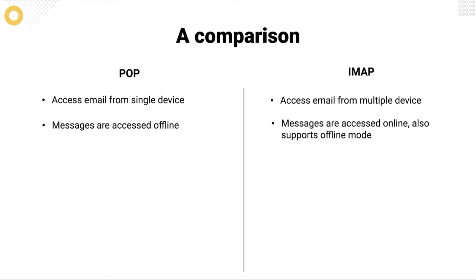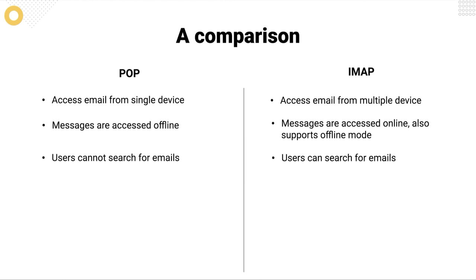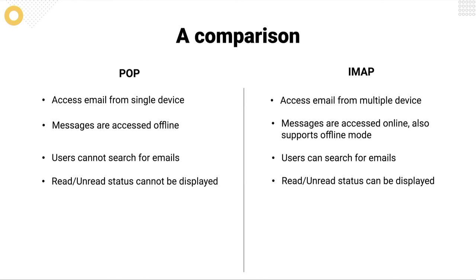With IMAP, your messages are accessed online. However, offline mode can also be supported — you'll read your messages online from your preferred device, but you can choose to access them offline as well. With POP, users can search for emails when integrated with POP. With IMAP, users can also search for emails. Since POP downloads emails from the email server in batches, you may not be able to see the read or unread status. With IMAP, you can see the read or unread email status for all emails in real time.